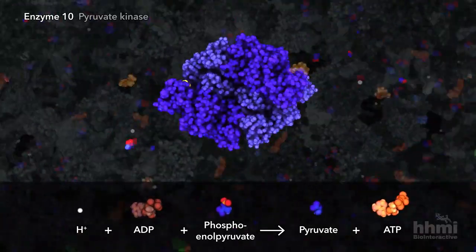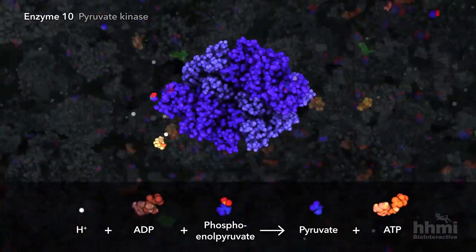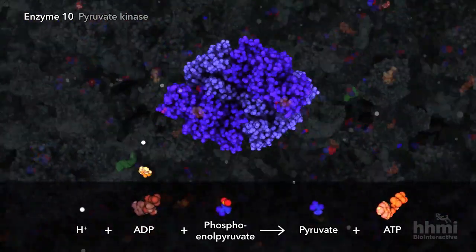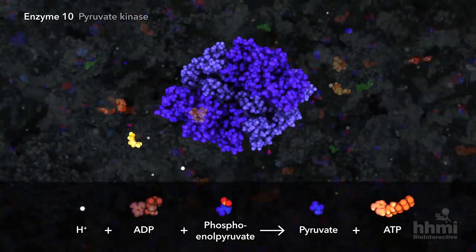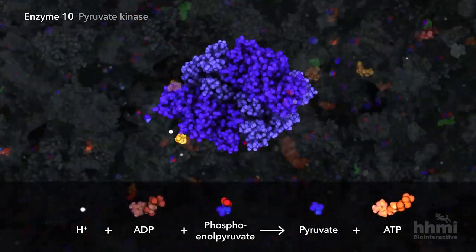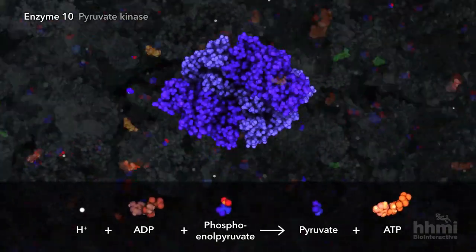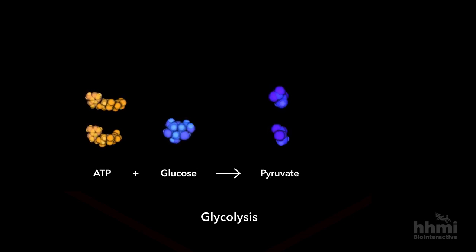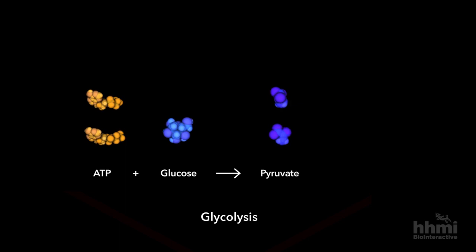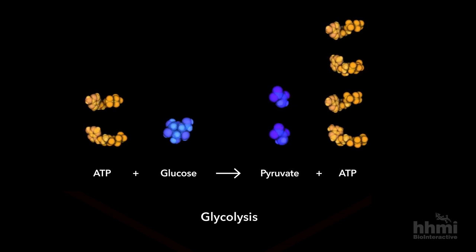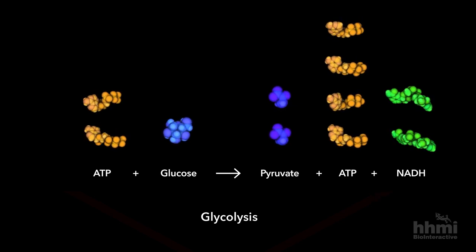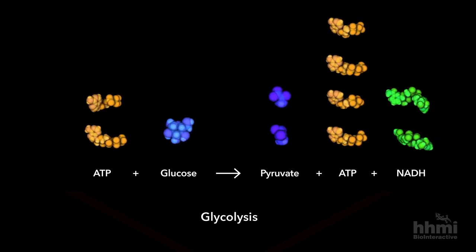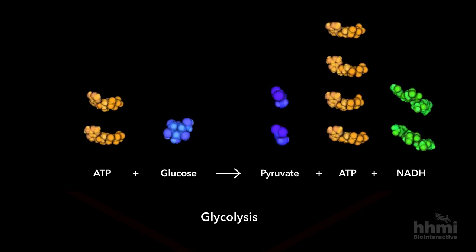Glycolysis finally produces a net gain in ATP. The glycolysis pathway breaks down glucose into two molecules of pyruvate, gaining 2 ATP and 2 NADH in the process.